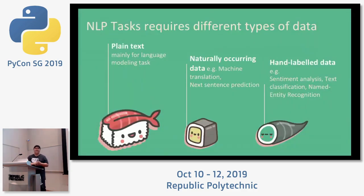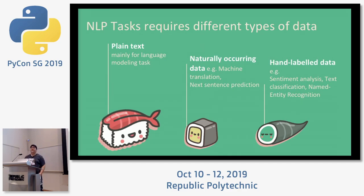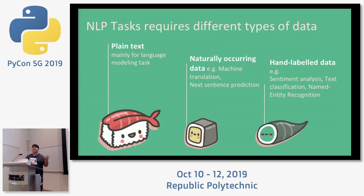In NLP there are many different tasks, and each task requires different data. There are basically three kinds of data you'll normally find. One is just plain text data — it appears everywhere online, on the streets, you can take photos, scan them, OCR them. Then there's naturally occurring data, like for machine translation or next sentence prediction. If you have a document, you already have data for next sentence prediction, because sentence one follows sentence two.